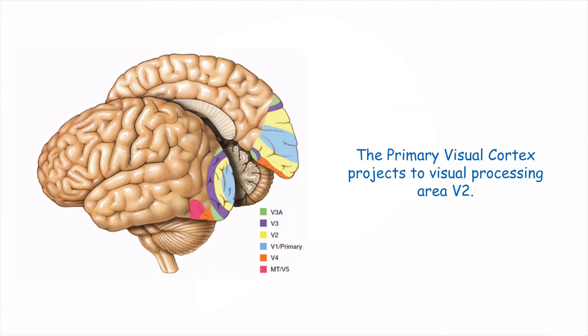Once visual information leaves area V1, it projects primarily to area V2, the next stage in visual processing.